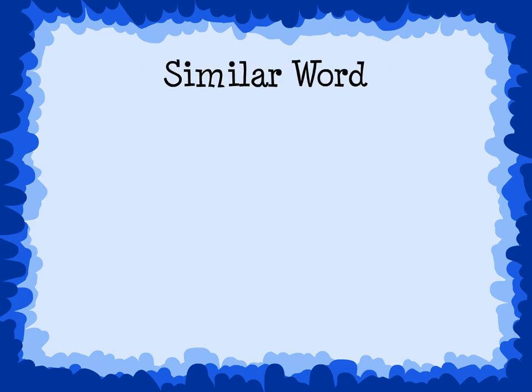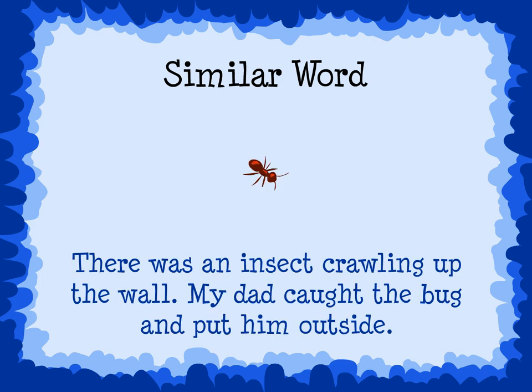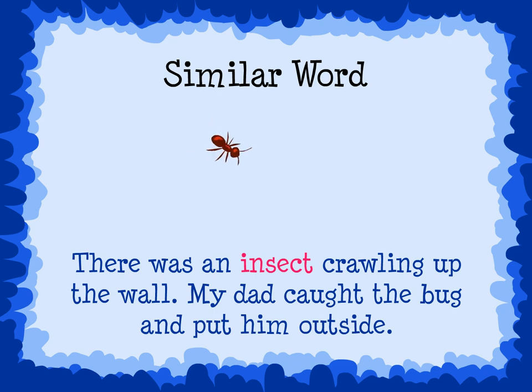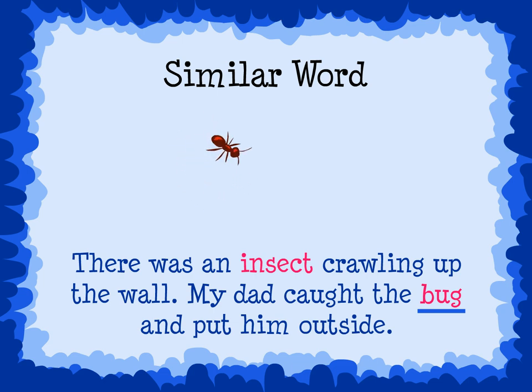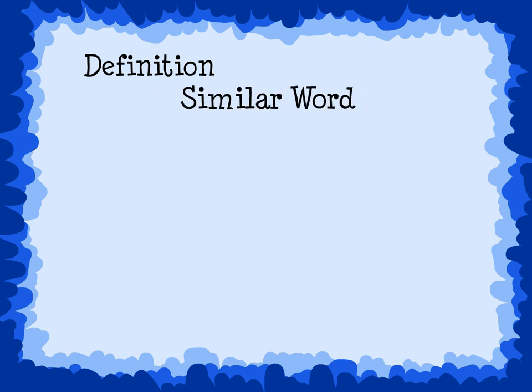Some context clues will use words that are similar to the word. For example: there was an insect crawling up on the wall. My dad caught the bug and put him outside. Notice that the sentence uses a word similar to insect when it used the word bug. Let's use context clues to figure out the underlined word in each sentence, and then tell if the context clue was a definition, a similar word, or an example of the unknown word.